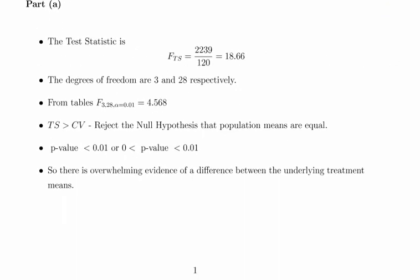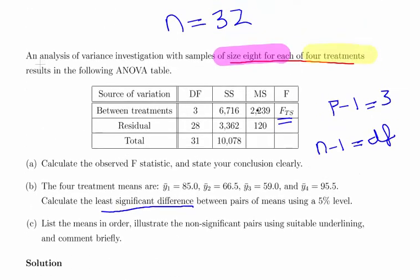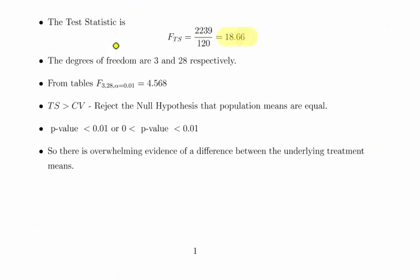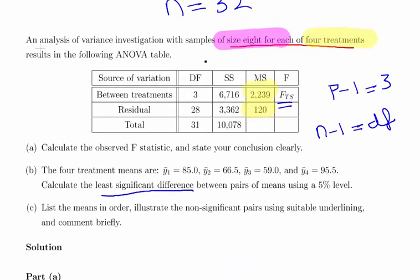So essentially the F test statistic is this value here divided by that value there. So it's 2239 divided by 120. So the test statistic there is 18.66, that's fine. Now the degrees of freedom are 3 and 28.